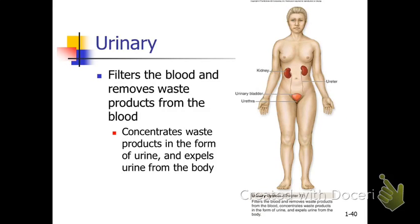The urinary system has a couple of kidneys, a couple of ureters, and the bladder. This system is filtering the blood and removing wastes in the urine. We'll talk about this system toward the very end of our semester.